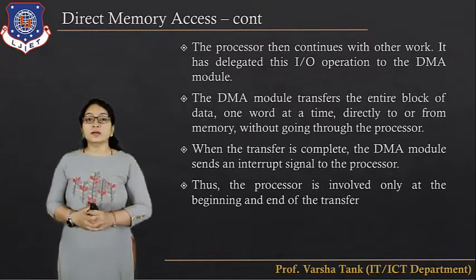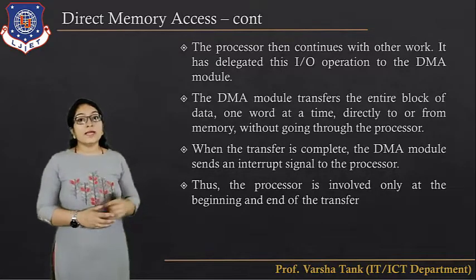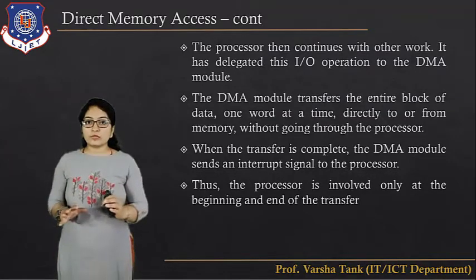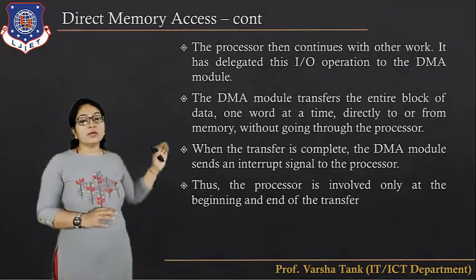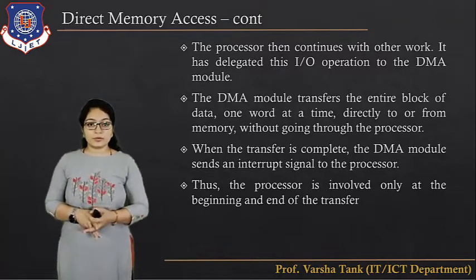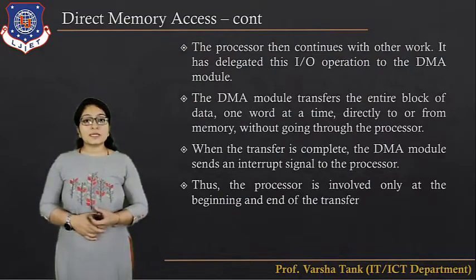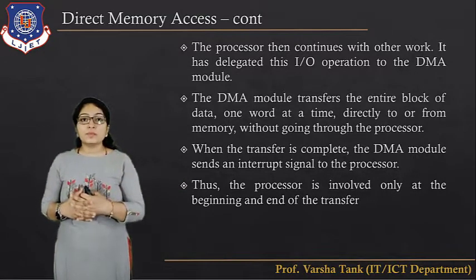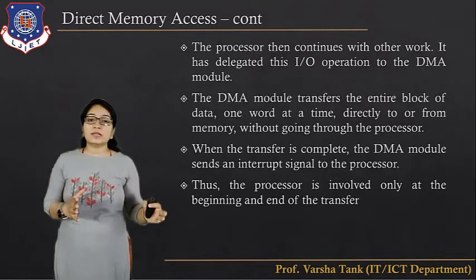The processor then continues with other work once control is handed over to the DMA module. It has delegated the I/O operations to the DMA module. The DMA module transfers the entire block of data, one word at a time, directly to or from memory without going through the processor. When the transfer is complete, the DMA module sends an interrupt signal to the processor. Thus, the processor is involved only at the beginning and end; the rest of the time the DMA module handles everything.